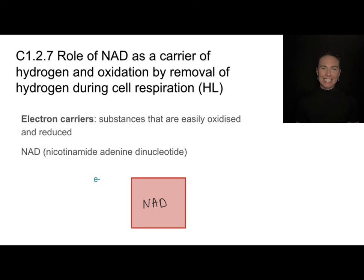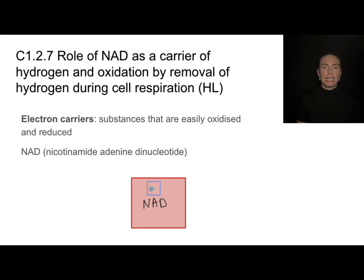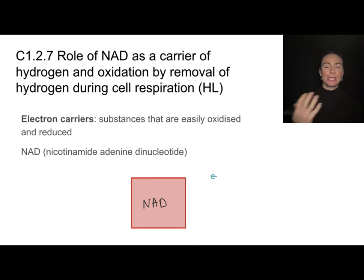An electron carrier is exactly what it sounds like — it is a molecule that carries electrons. Another way of thinking about that is it is easily oxidized and reduced. Reduced meaning it can easily gain an electron, and oxidized meaning it can easily then lose that electron or pass it along. In the meantime, it is a temporary electron carrier.